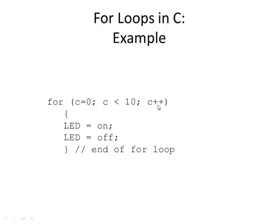Then C++ means increment C — add one to C. So C starts at zero, becomes one, and we check: is one less than 10? Yes, so it does the loop again. This continues, incrementing each time, through values 2, 3, and so on. When C reaches 9, is nine less than 10? Yes, so we go through once more. Then C++ makes it 10. Is C less than 10? No — it's equal to 10, so we don't go into the loop. Instead we drop out and skip to the code after the loop.